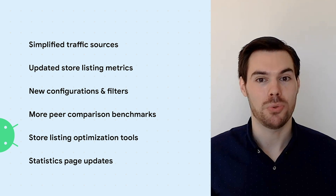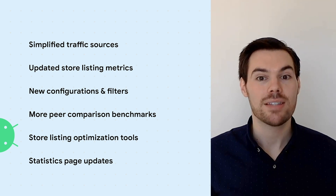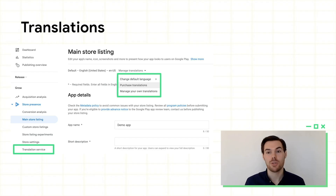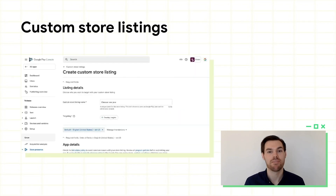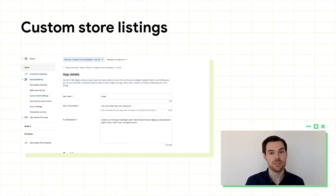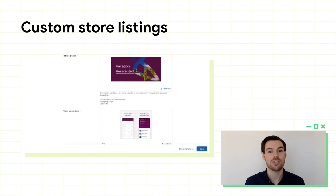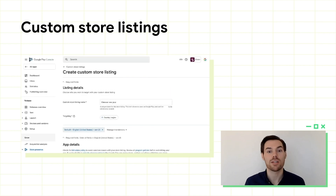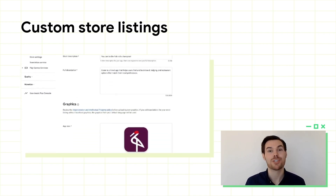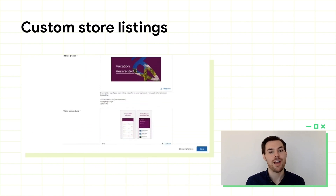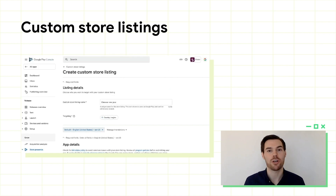There are several other Play Console tools that you can use to optimize your store listing based on the insights that you draw from the reports. If your app has a low conversion rate in certain languages, consider using Play Console's translation service or adding custom localizations to your store listing. Then, you can use the acquisition report's language dimension to see if your conversion rate improved. If your app has a large number of visitors in certain countries, consider creating a custom store listing, where you can tailor your text, screenshots, and videos for different interests or holidays. Then, you can use the acquisition report's store listing dimension to measure how they're doing, and decide if you want to make changes or add new targeting options.